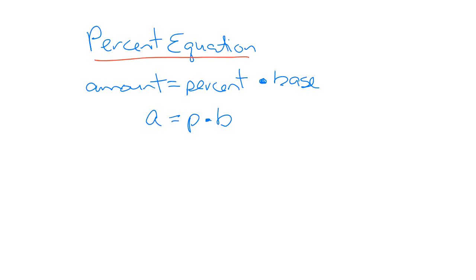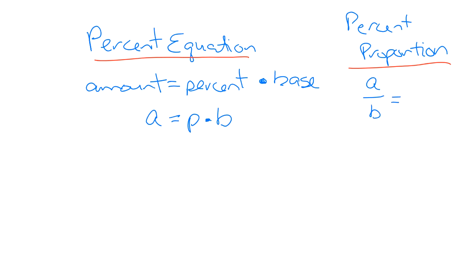We also reviewed the percent proportion, which we are going to go further in depth on today. The percent proportion uses A over B is equal to the percent divided by 100 — the amount divided by the base is equal to the percent divided by 100. When you substitute the value in for the percent, you don't change the percent into a decimal before placing it into this formula, because dividing by 100 takes care of that decimal movement.